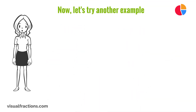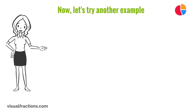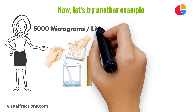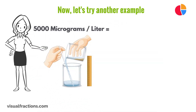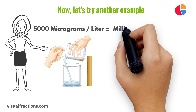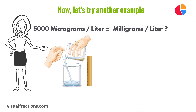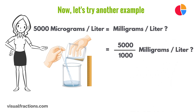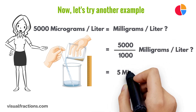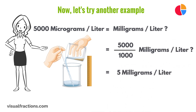Now, let's try another example. Say you have a research paper that reports a concentration of 5,000 micrograms per liter, and you want to convert it to milligrams per liter. We start by dividing 5,000 by 1,000. This gives us 5 milligrams per liter.